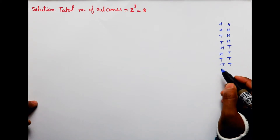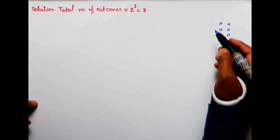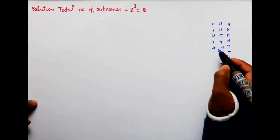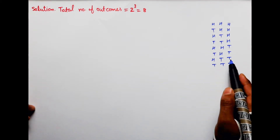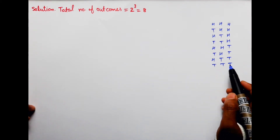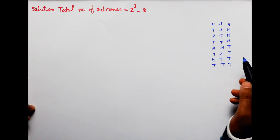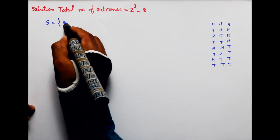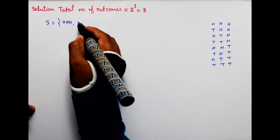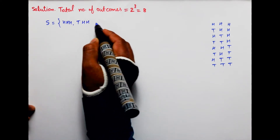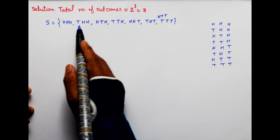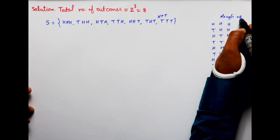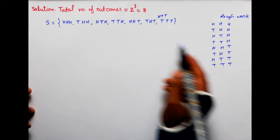Head, tail, head, tail — you can write eight times. Four times head or four times tail. These are total possible outcomes when three different coins are tossed. Here we can write the sample space: HHH, HHT, HTH, HTT, THH, THT, TTH, TTT. This is the rough work; this is the solution. You can write these outcomes.